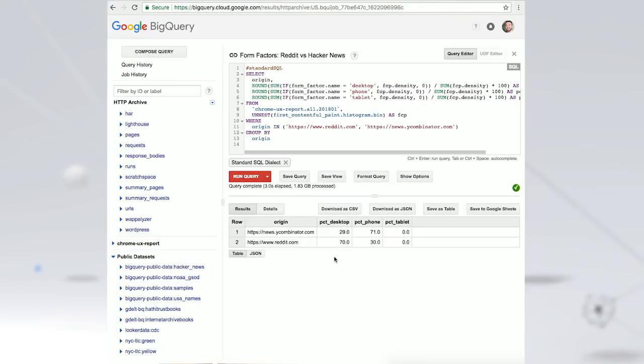Surprisingly, the sites have very different usage patterns on desktop and mobile. With Hacker News 70-30 in favor of mobile and Reddit 70-30 in favor of desktop. Both sites have a very small percent of tablet usage.